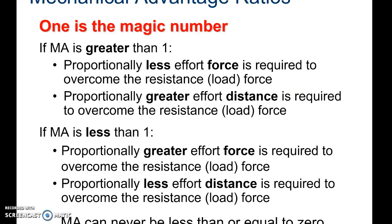In order to have an advantage to a machine, the mechanical advantage equation has to be greater than one. If it's less than one, then you do not have an advantage in your machine.